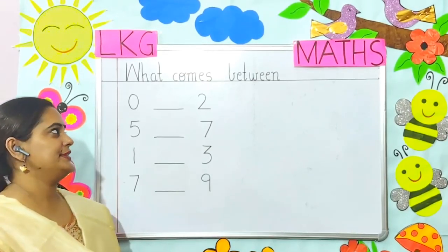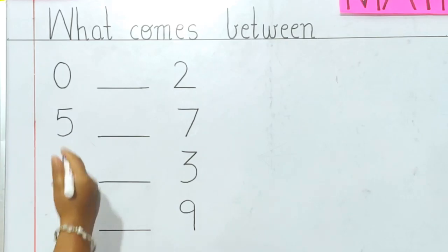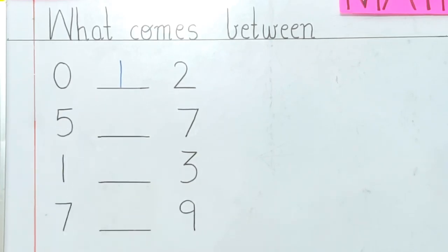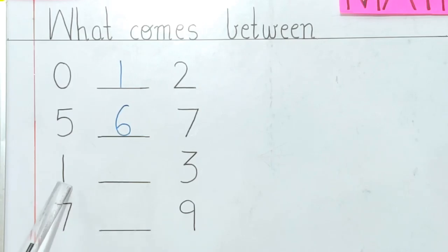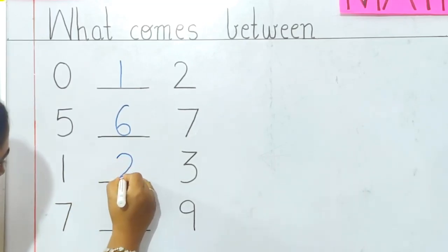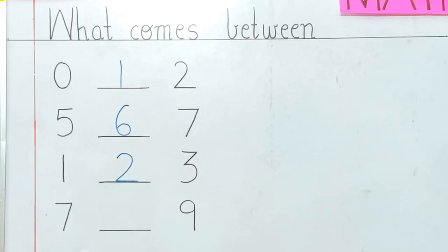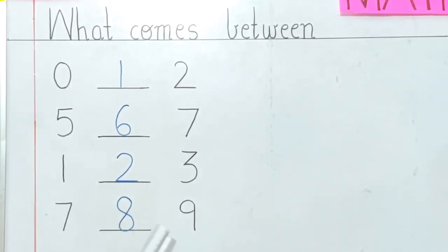Let's see a few more examples. What comes between 0 and 2? After 0, what number is that, children? Yes, it is 1. So we will write 1 here. Next: what comes between 5 and 7? Start counting from 5 — 5, then 6. Yes, so we will write 6 here. Next is 1 and 3 — after 1, what number is there? 2. So we will write 2 here; 2 comes between 1 and 3. The next numbers are 7 and 9 — after 7, what number is there? Yes, it is 8. So we will write 8 here; 8 comes in between 7 and 9.